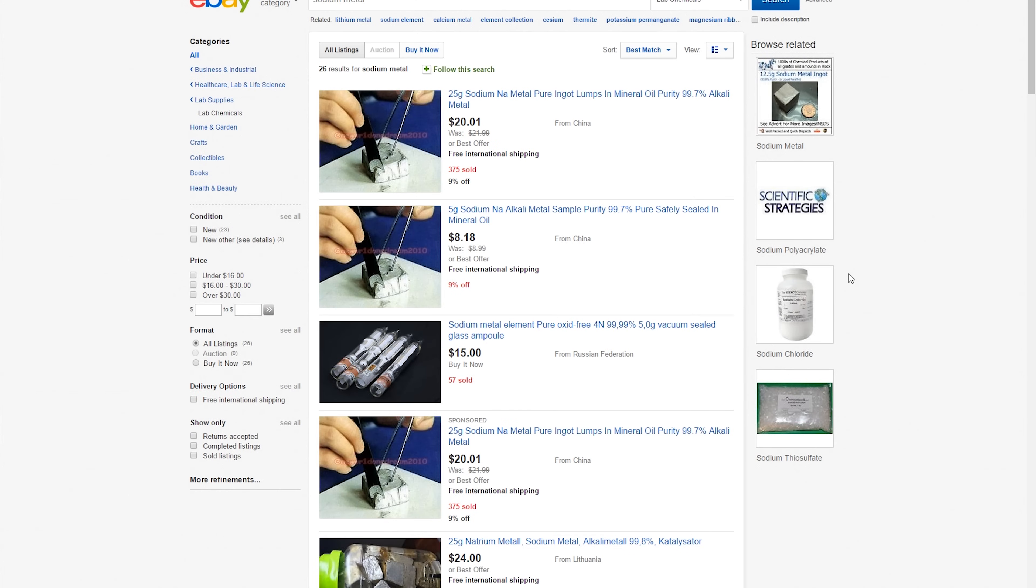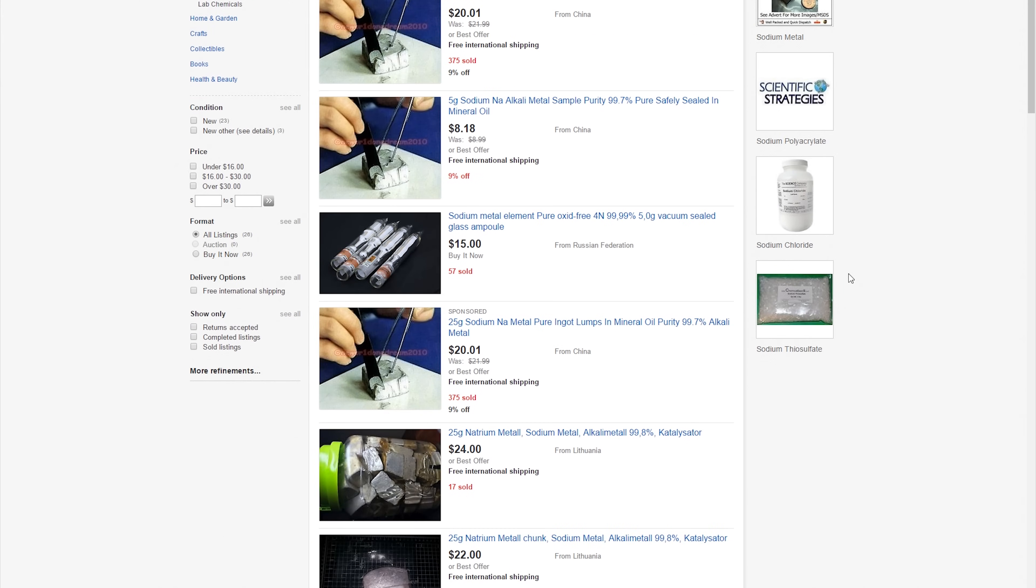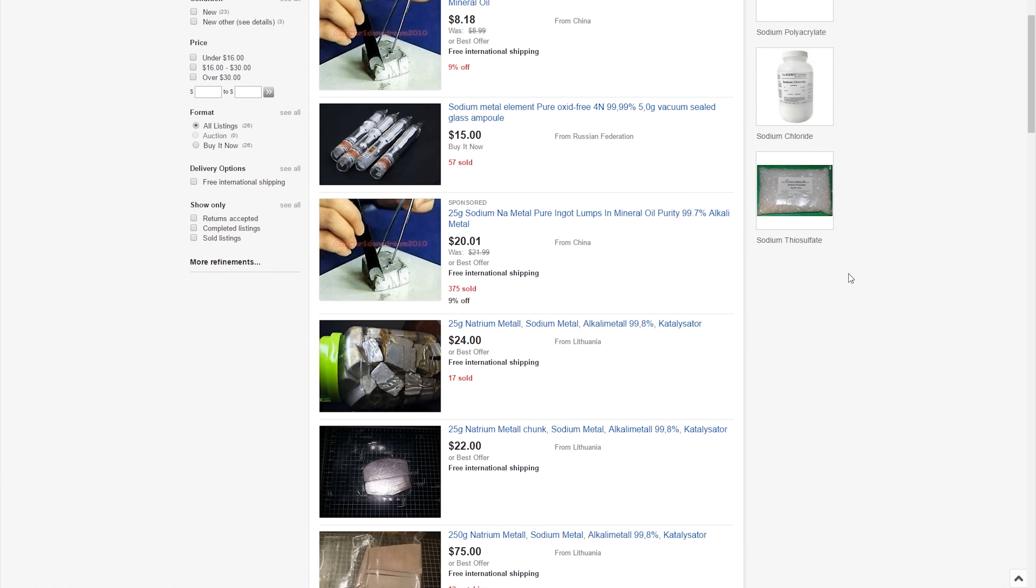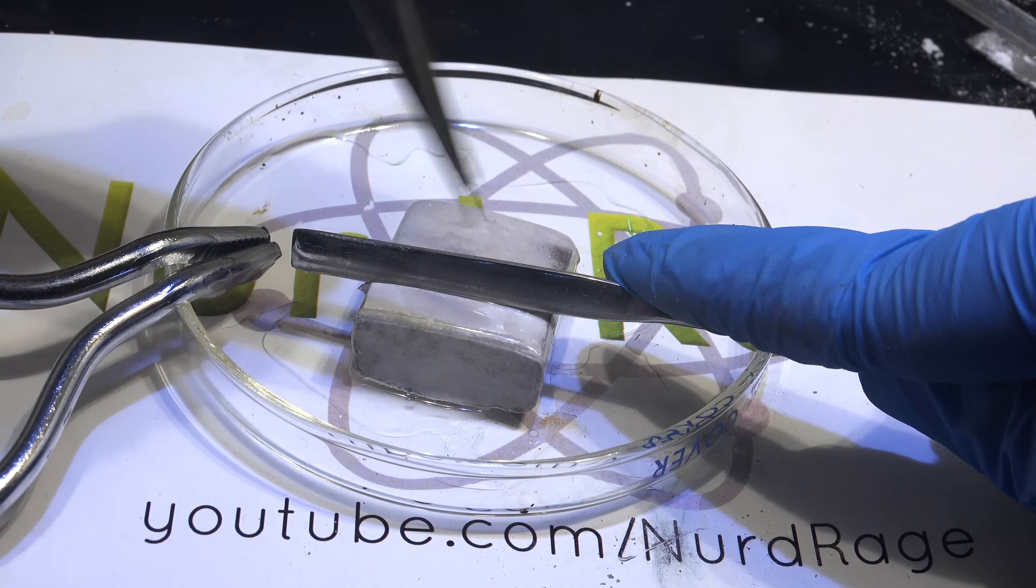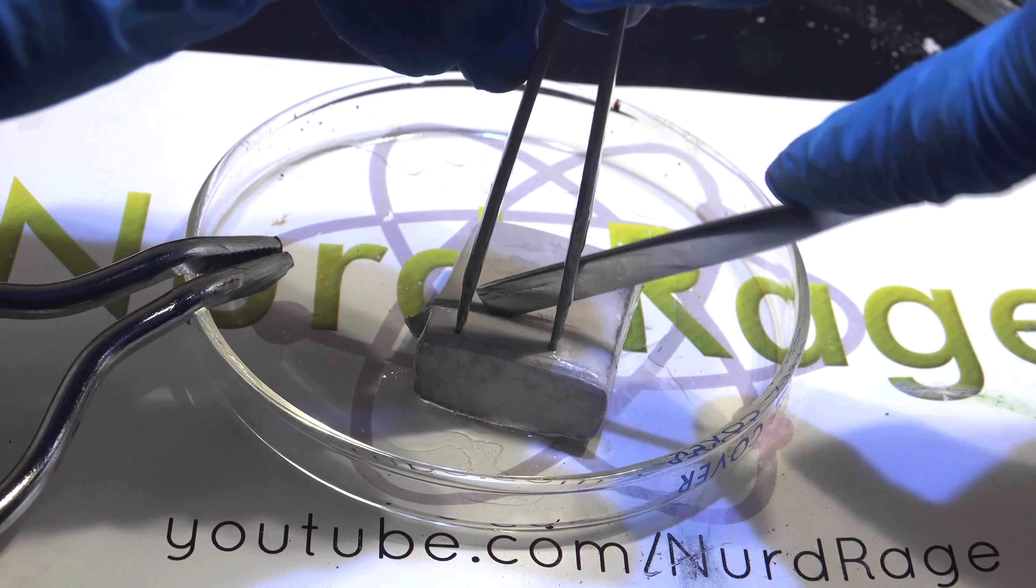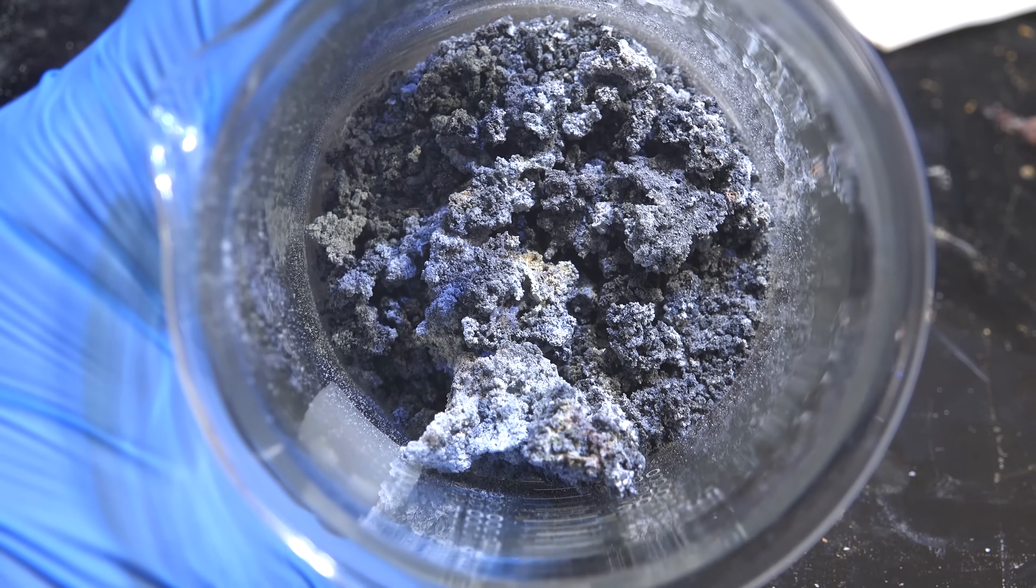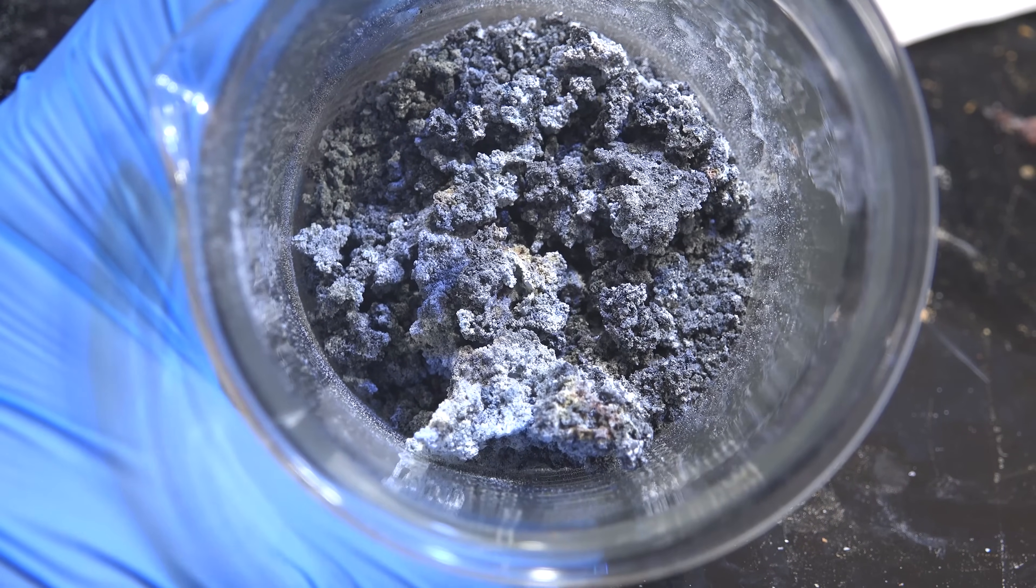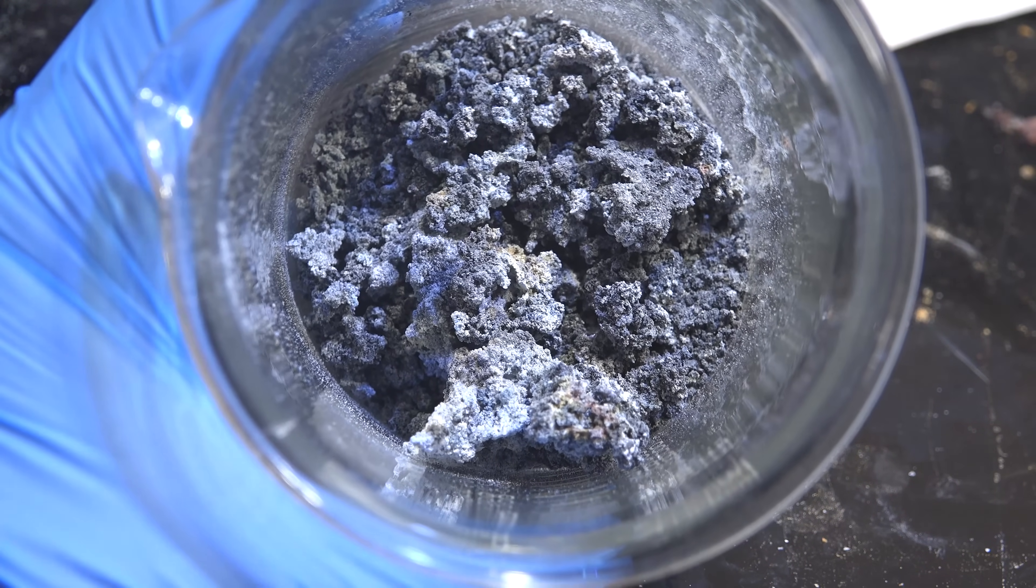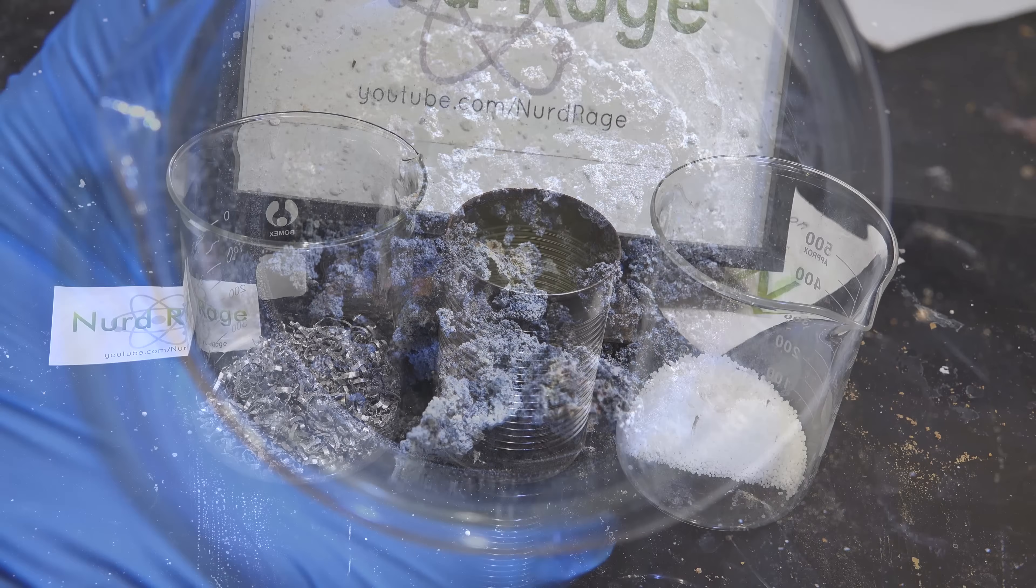Now in recent years getting sodium metal has become much easier. Online sellers can be sought out who will now sell sodium to individuals. But making actual sodium metal without electrolysis remains one of the holy grails of amateur chemistry. Until now. First we need some sodium magnesium oxide aggregate. I already showed how to do this in a previous video so I won't go over it in detail. Please check the link in the video description for how this is made.